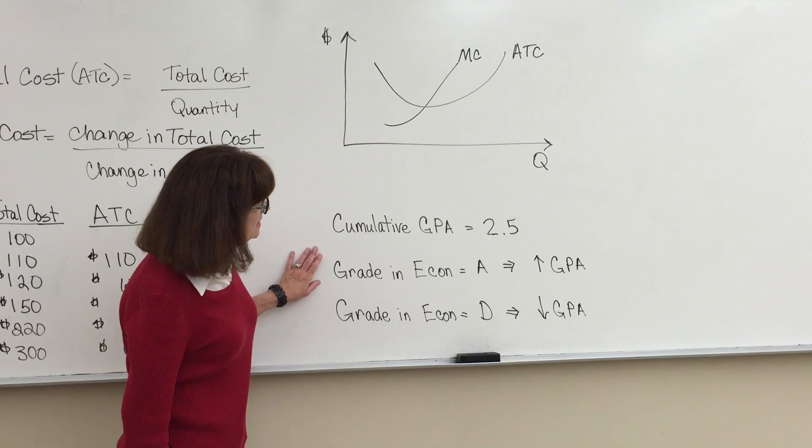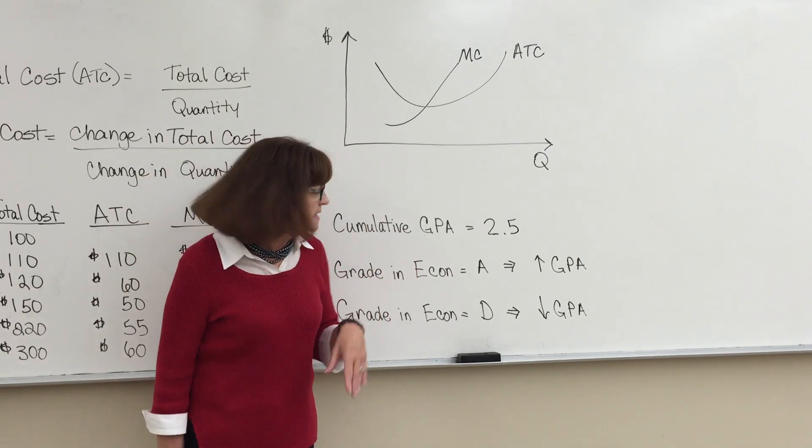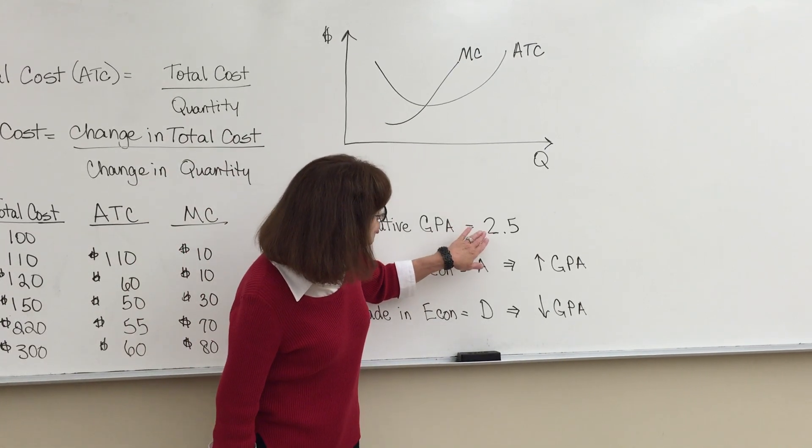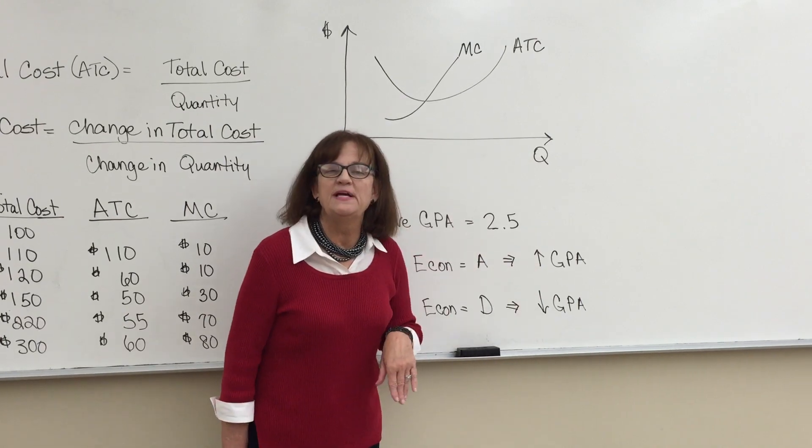So if you made an A in econ, that would be your marginal grade. An A would pull your average up and your GPA would rise.